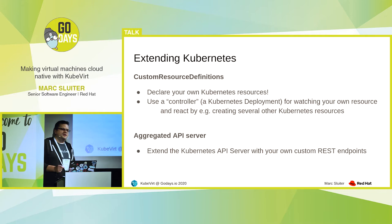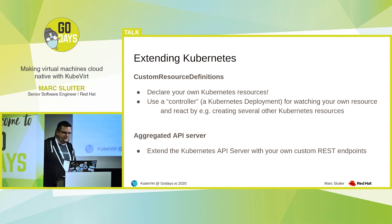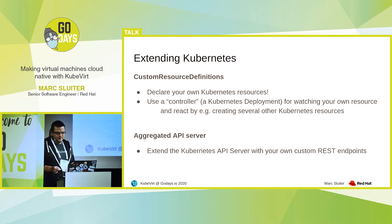One very cool feature about Kubernetes is that you can extend its functionality. You can do this in two ways. The first one is custom resource definitions. With this, you can declare your own Kubernetes resource types — not just deployments and pods, but also your own resource type. And then you implement a controller, which is deployed as a normal deployment, and that one is watching for instances of your custom resource definition. When it sees one, it knows what to do by, for example, creating a deployment, a config map, a service, and several things for you.